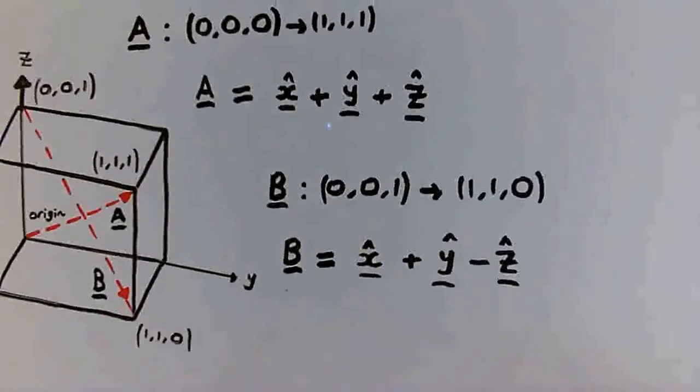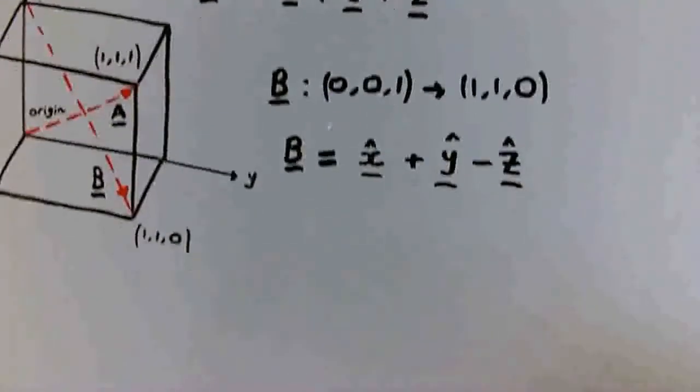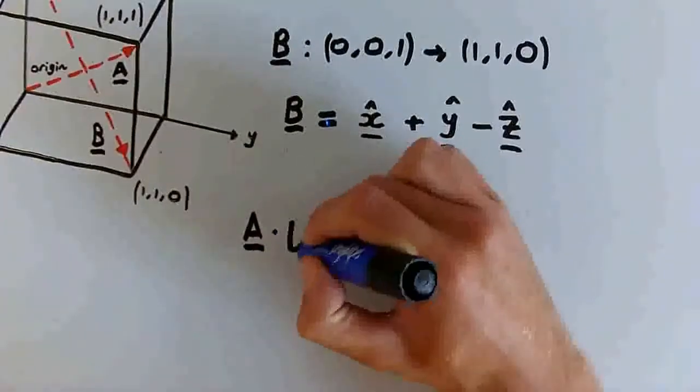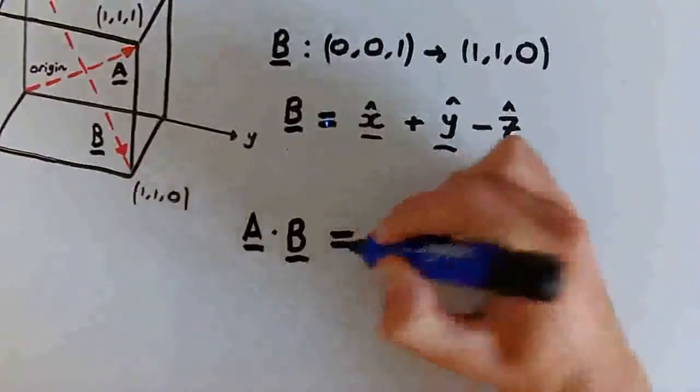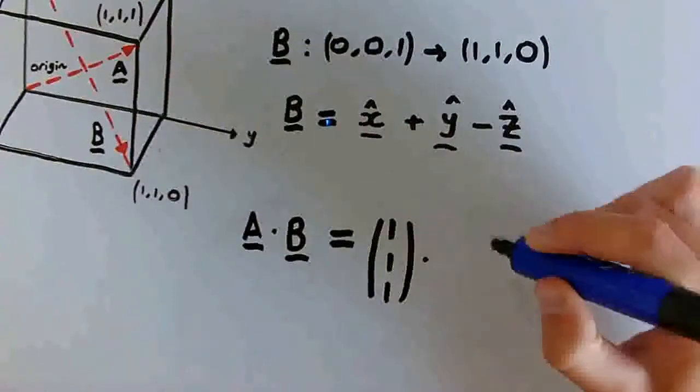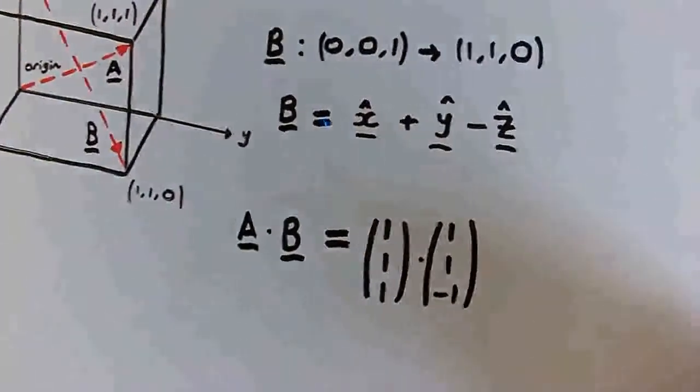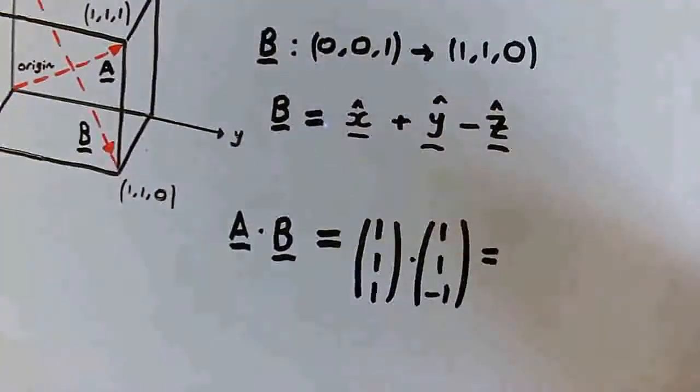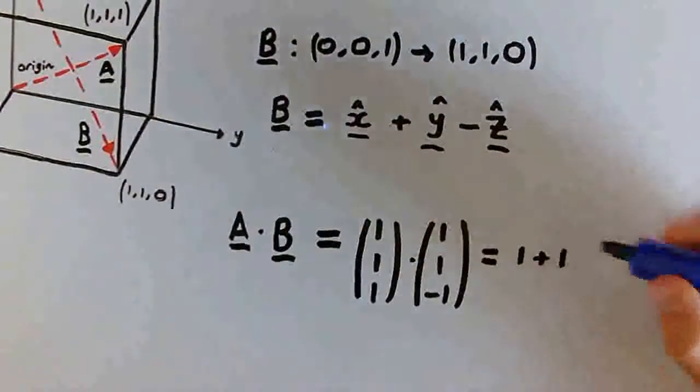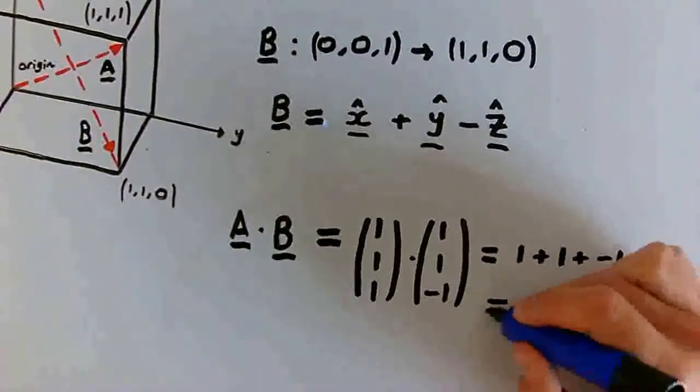Okay, so now we can do some vector calculus which will help us calculate the angle between these two body diagonals. We'll work out the dot product of A and B. I'll just write them in column vector form, where A is 1, 1, 1 and B is 1, 1, minus 1. And this works out to be 1 times 1 is 1, plus 1 times 1 is 1, plus 1 times minus 1 is minus 1, equals 1.